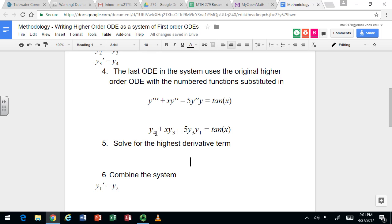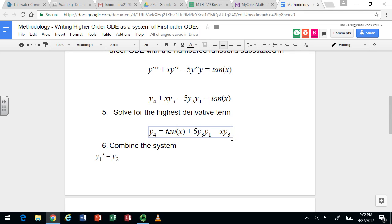Now we want to get back to a system. So what we're going to do is work through the system backwards, and we're going to solve for the highest derivative term. So let's take this thing and let's solve for y4. We're going to do that just by adding stuff to the other side, right? So let's add the 5y3y1 to both sides, and then we're going to subtract the xy3 from both sides.